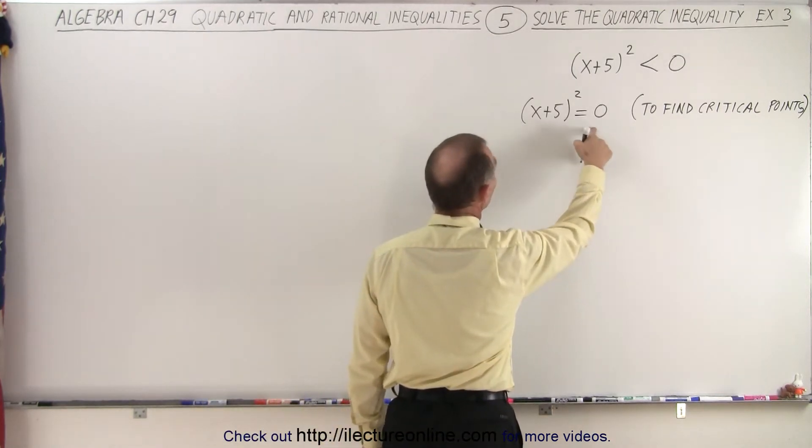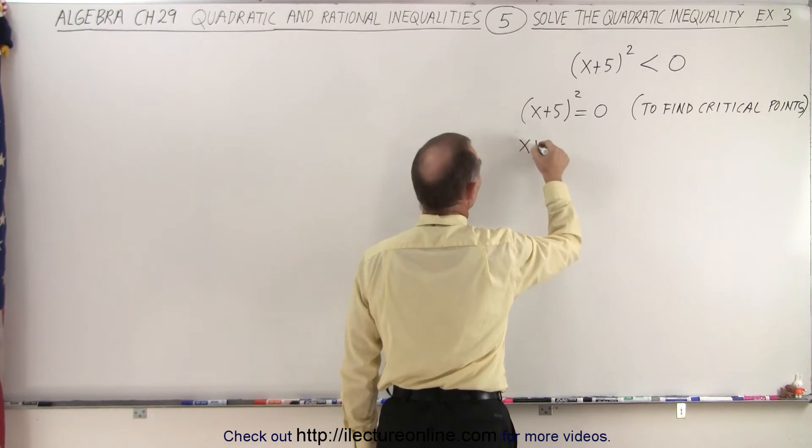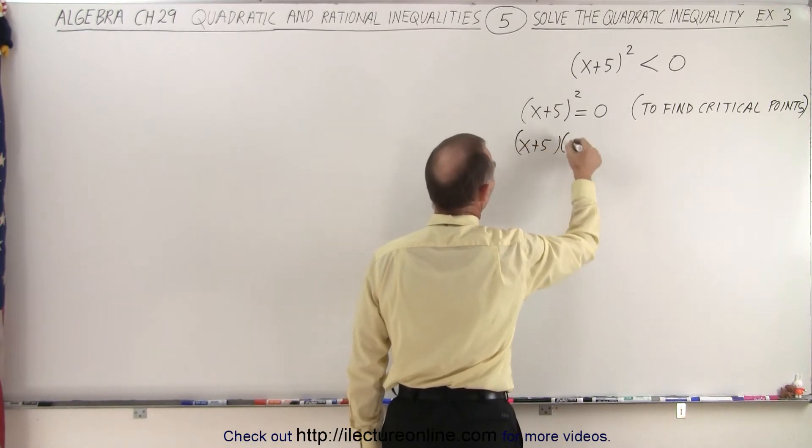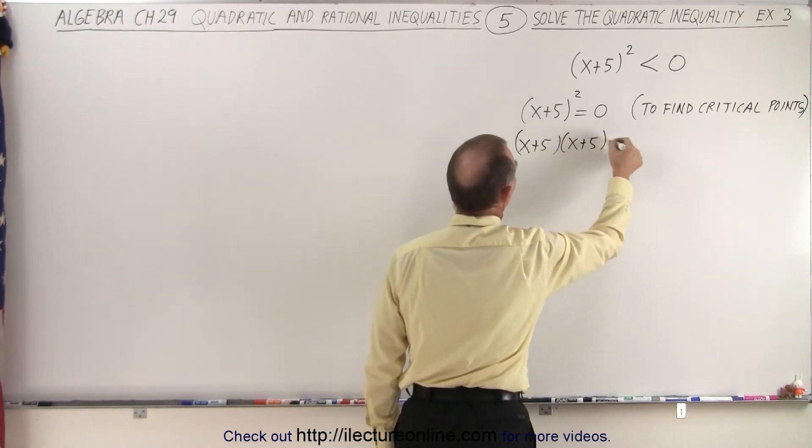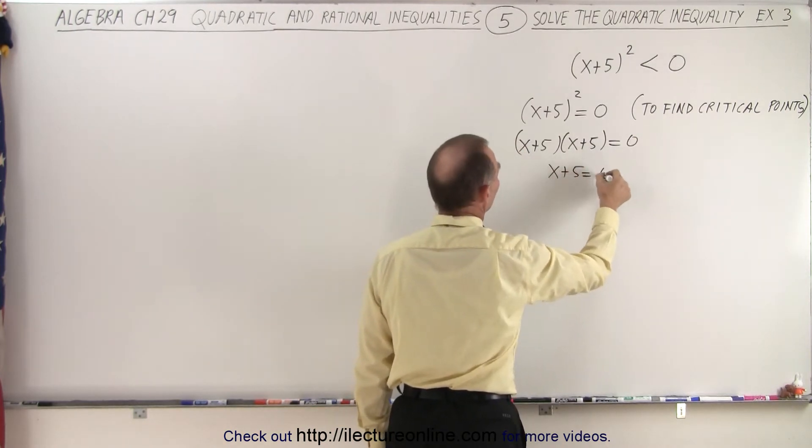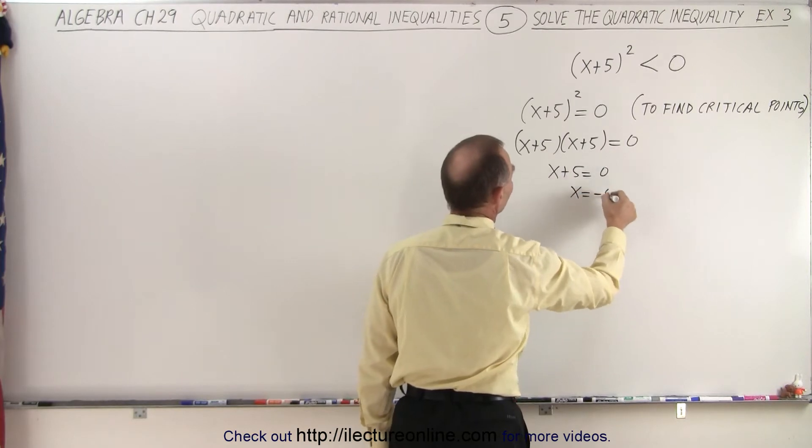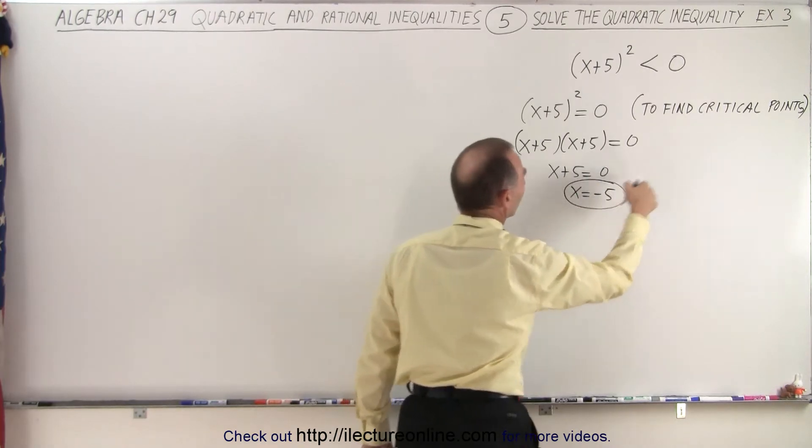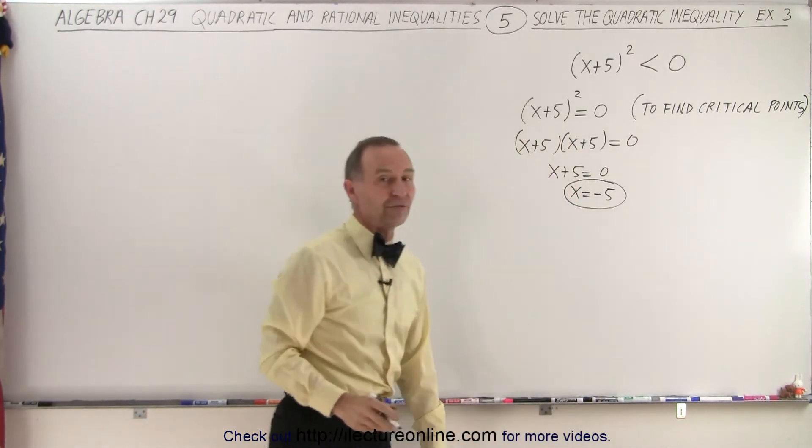So we have x plus 5 squared equals 0. That means that x plus 5 multiplied times x plus 5 is equal to 0. In this case, there's only one solution. We have x plus 5 equal to 0 or x equals negative 5. So this is the critical point that we're looking for.